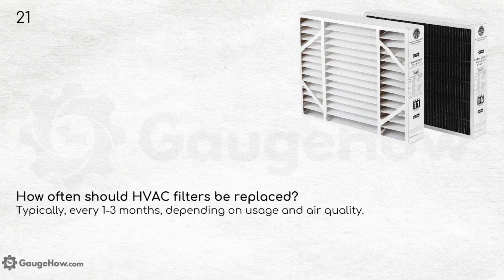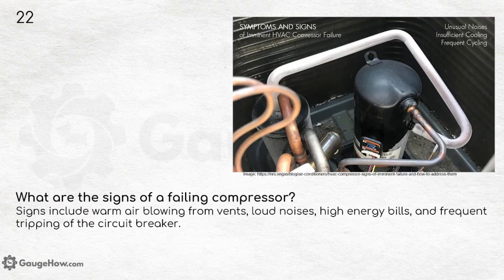How often should HVAC filters be replaced? Typically every 1 to 3 months depending on usage and air quality. What are the signs of a failing compressor? Signs include warm air blowing from vents, loud noises, high energy bills and frequent tripping of the circuit breaker. High energy bills, frequent circuit tripping and loud noises are real signs you can recognize without needing someone to inspect the compressor.